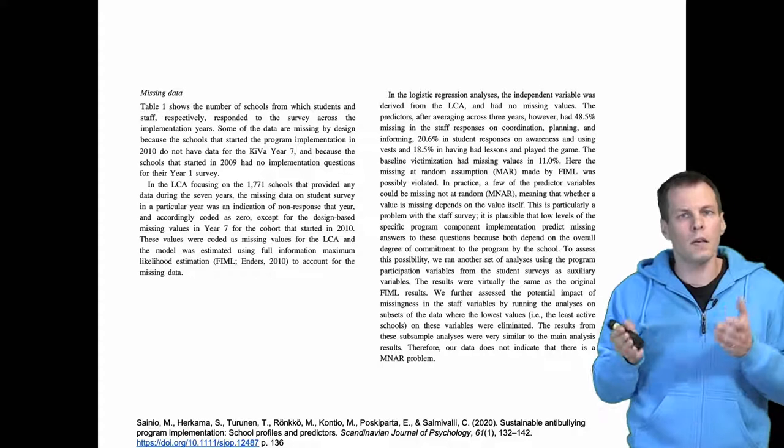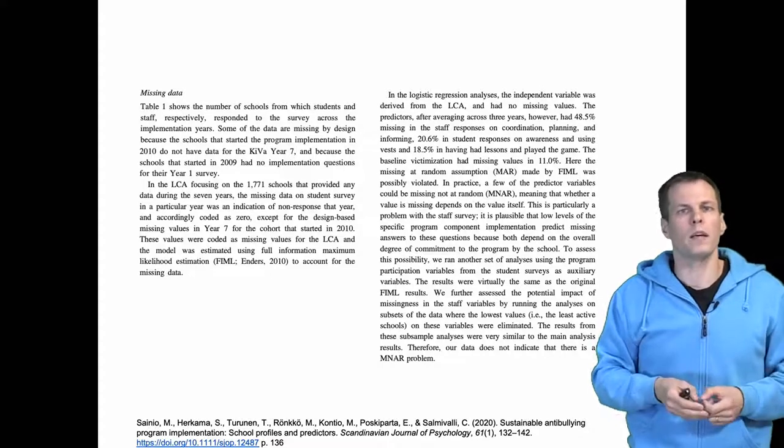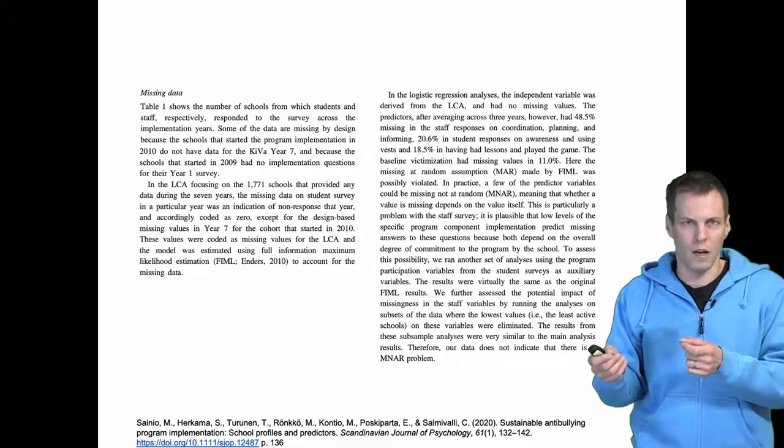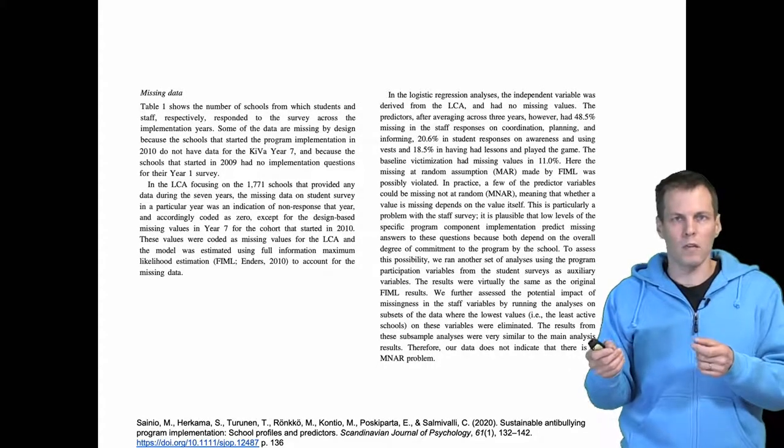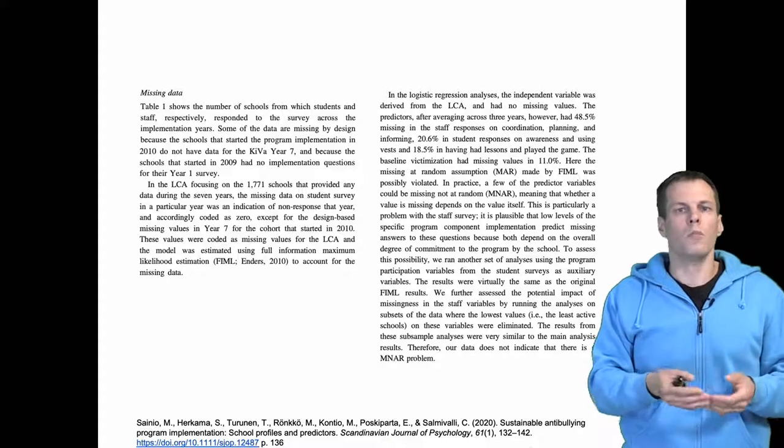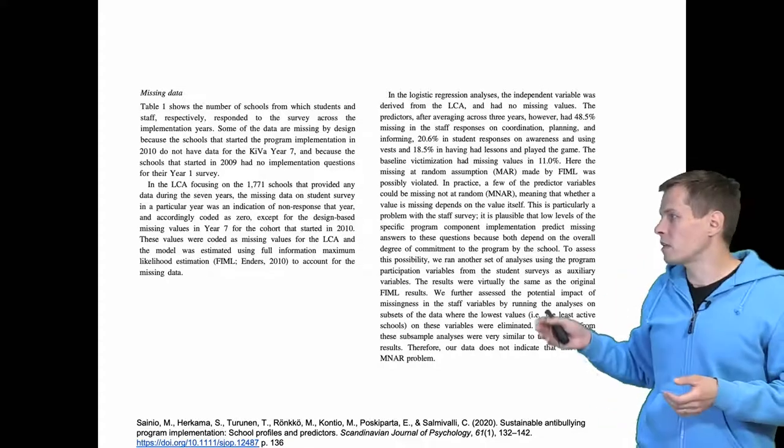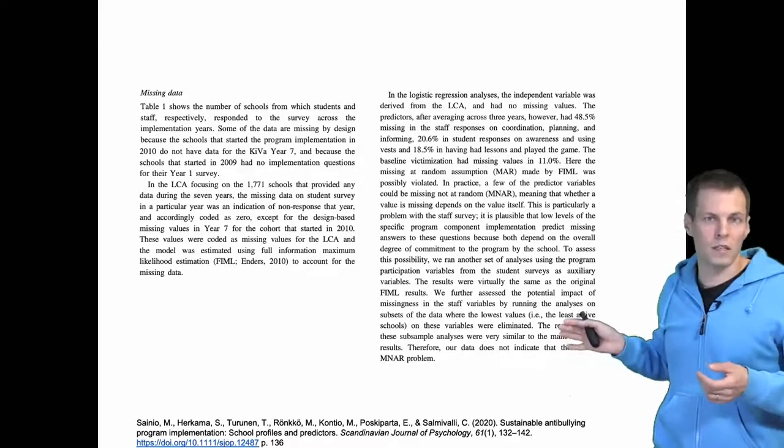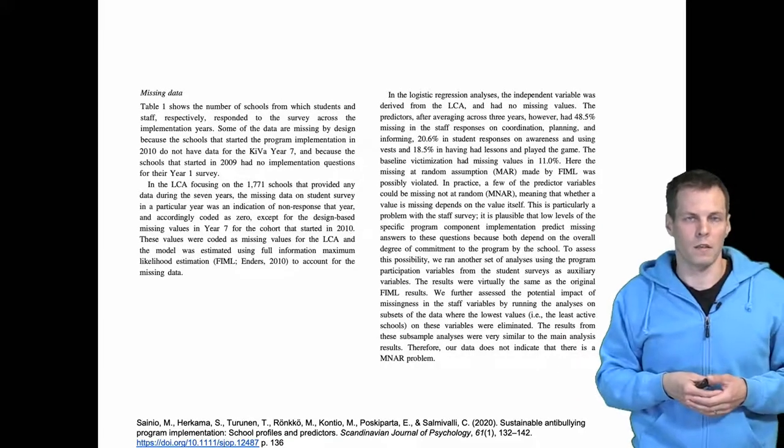And then we explain the assumption. So we make the missing at random assumption. We discuss the missing not at random and what is the risk of missing not at random being the case in our data. And then we tell that we used auxiliary variables. And then we do some robustness checks by doing different things.